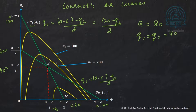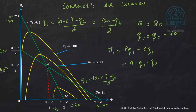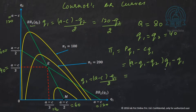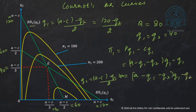These curves are called isoprofit lines. The profit of firm 1 is P*Q1 minus C*Q1, which equals (A minus Q1 minus Q2)*Q1 minus C*Q1. Since Q1 depends on Q2, this is the entire profit function of the firm. If we set profit equal to a constant, say 100, and vary Q1 and Q2, we trace out an isoprofit line — a curve along which profit remains constant at 100.